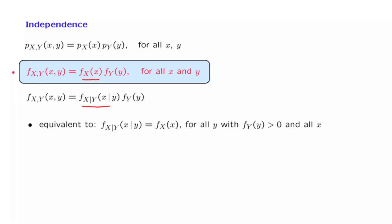Notice also that this definition is symmetric as far as x and y are concerned. So by symmetry, when we have independence, it also means that x does not convey any information about y, and that the conditional density of y given x has to be the same as the unconditional density of y.